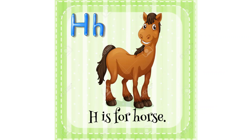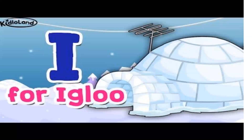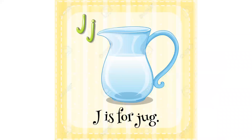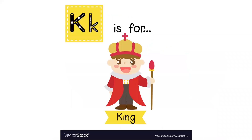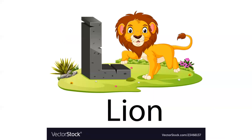H — H is for horse. I — I for igloo, I for igloo. J — J is for jug, J is for jug. K — K is for king.